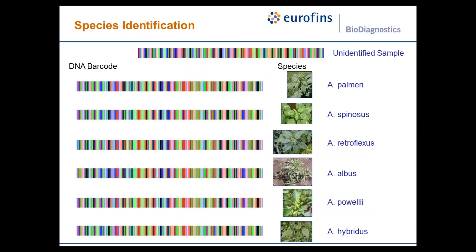This slide illustrates in a simplified manner how the matching works. If the top sequence is the ITS sequence received from testing an unidentified seed, we take this unique pattern and compare it to all ITS barcode sequences available in GenBank, find the exact match, and make the species identification. If the sequence is an exact match to a Palmer Amaranth sample, we identify it as Palmer Amaranth. If no exact match is found, we find the closest match and make the identification based on that.